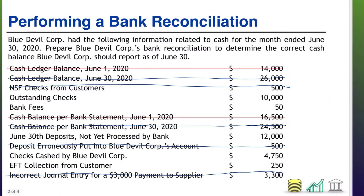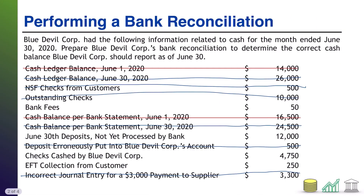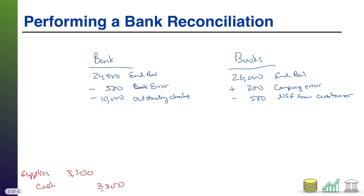Next up: bank fees, $50. The bank charged a fee of $50. The bank knows it charged the fee, so it's in the bank balance. We're the ones who didn't record this in our journal entries yet. Therefore, we need to subtract that $50 from our side — bank fee.